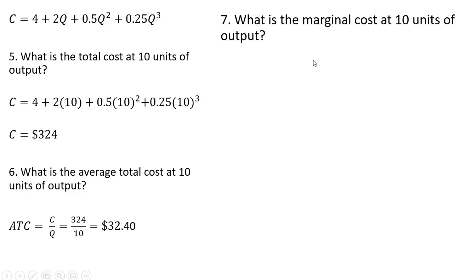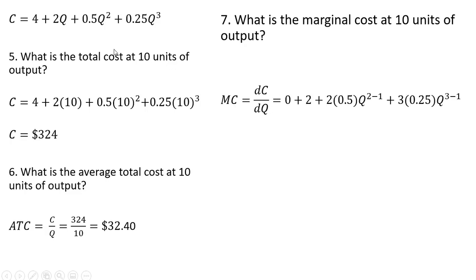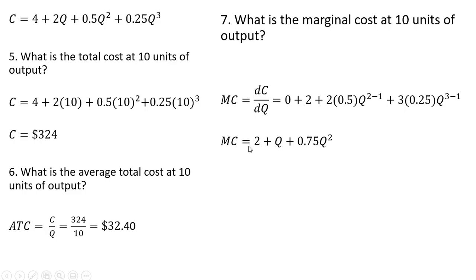Question 7: what is the marginal cost at 10 units of output? We take the derivative of the total cost equation. The derivative of the constant 4 is 0. The derivative of 2Q is 2. For 0.5Q², we bring the exponent down in front — getting 2 times one-half — and subtract 1 from the exponent. For 0.25Q³, the exponent comes down in front again and we subtract 1. Simplifying, we get the marginal cost equation. Evaluating at 10 units of output, we get $87.